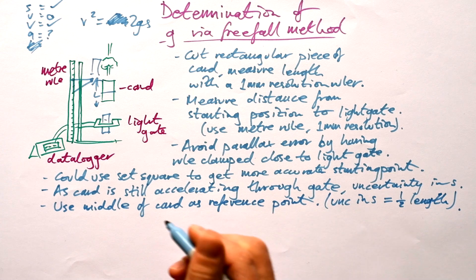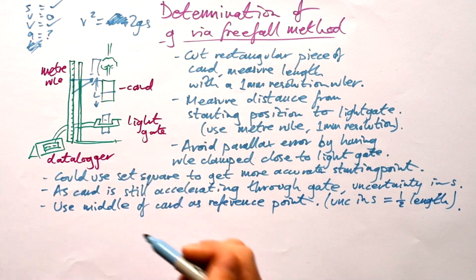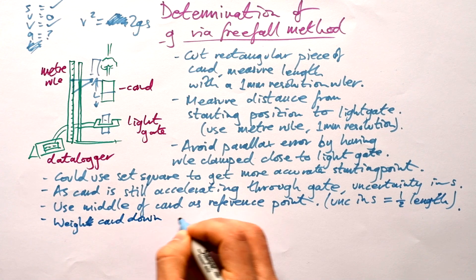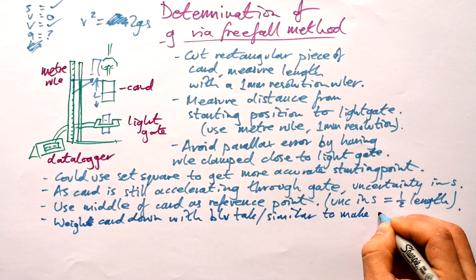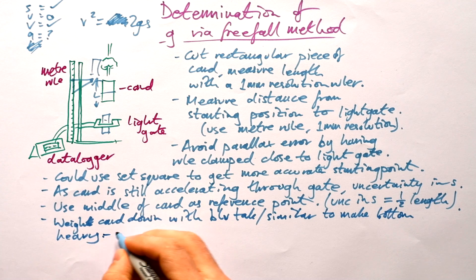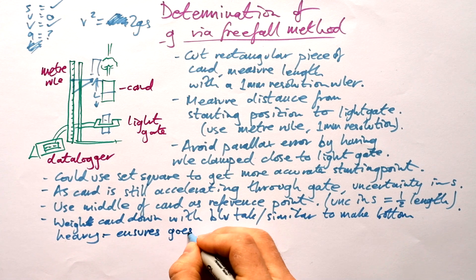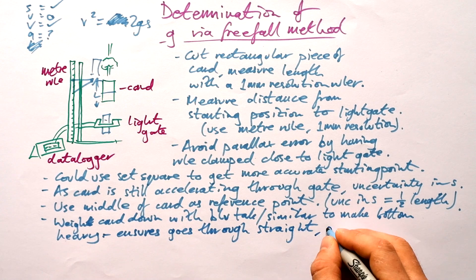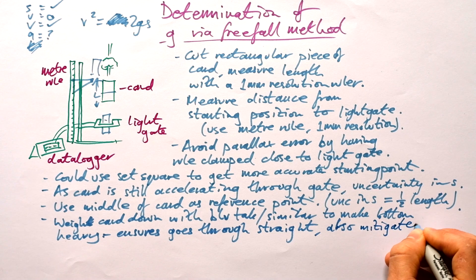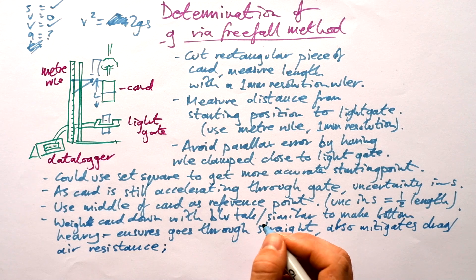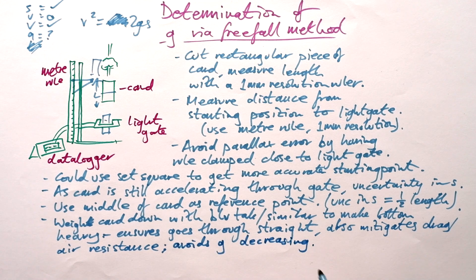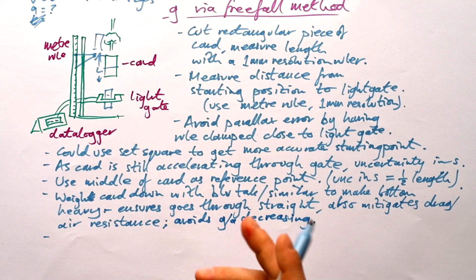Now we want to make sure that it drops nice and straight as well. We don't want it falling off squiff as it goes through the light gate. So we're going to weigh the card down with blue tack or similar to make bottom heavy. Like we said, it ensures it goes through straight because if it falls diagonally, then the length of card that you put into your light gate isn't going to be correct. Also, it mitigates or reduces the effect of drag, air resistance. Because if our card is really, really light, then it could actually reach terminal velocity or the acceleration could reduce anyway. Avoids g decreasing. When I say g, I mean the actual acceleration, not acceleration due to gravity, obviously. So that's one way that we can obtain accurate readings.